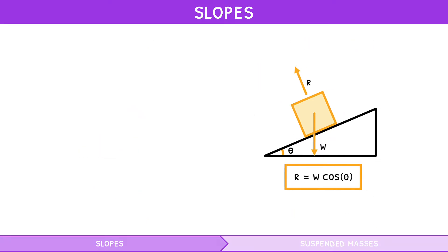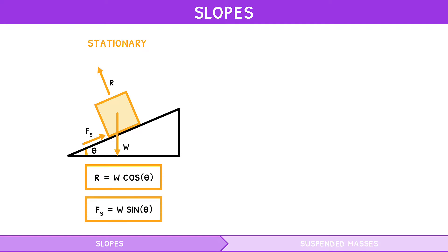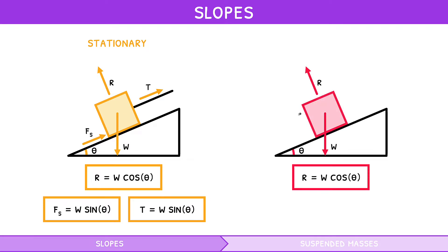There are two variations of this scenario. First, the block is held stationary, i.e. at static equilibrium. Here, friction is static and equal to weight times sine of theta. A variation involves using a rope to keep the block stationary — in this case, tension is equal to weight times sine of theta. Second, the block is moving at constant velocity, i.e. dynamic equilibrium. The third force is dynamic friction, also equal to weight times sine of theta.